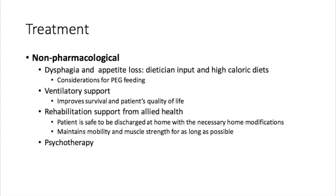Non-pharmacological approaches are very important. In patients with dysphagia and appetite loss, dietician input and high-calorie diets are worthwhile goals, and PEG feeding can be considered. Ventilatory support has been shown to improve survival and quality of life. Rehabilitation and allied health input is very important to ensure patients are safe at home with necessary home modifications. Occupational therapy involvement helps patients maintain mobility and muscle strength for as long as possible. Given the significant psychological impact of this disease, psychotherapy and psychology input are also important.